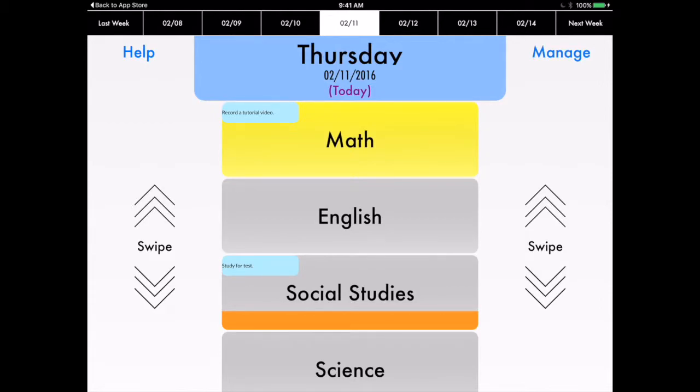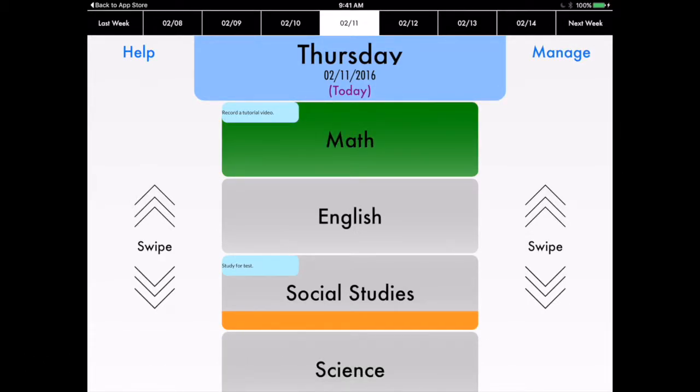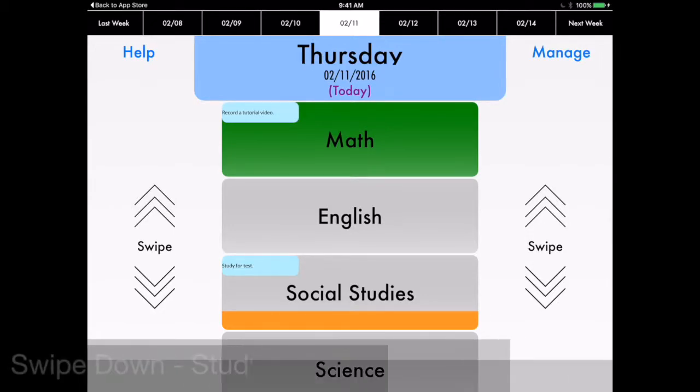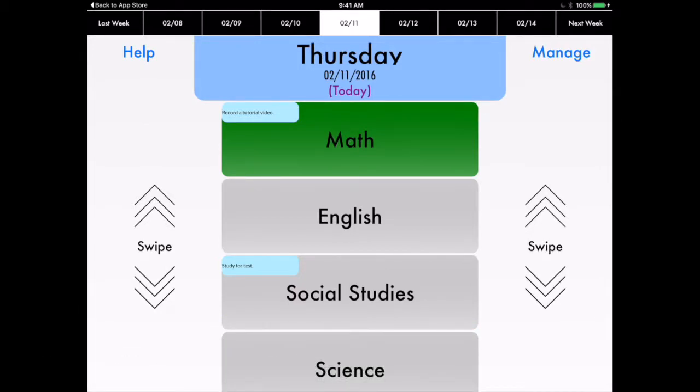And that's it. So let's say we go home, I do my math homework, I finish my tutorial video. I just swipe right, and that turns green to indicate that that's done. Let's say I study for my social studies test. I swipe up to show that I had the study. I just swipe down to show that I'm all done with studying. And then we can move on to the next day.